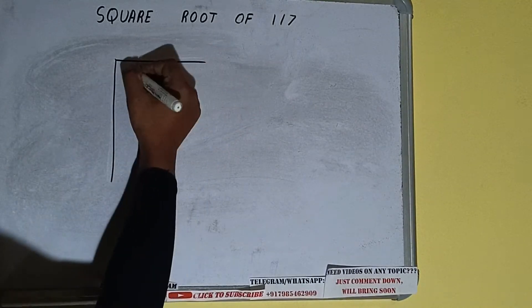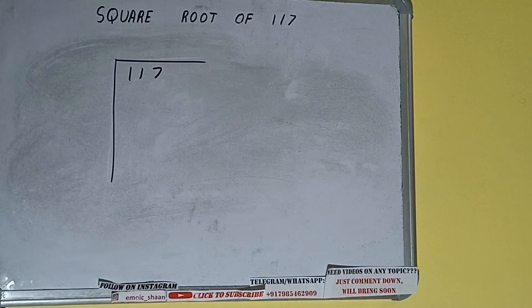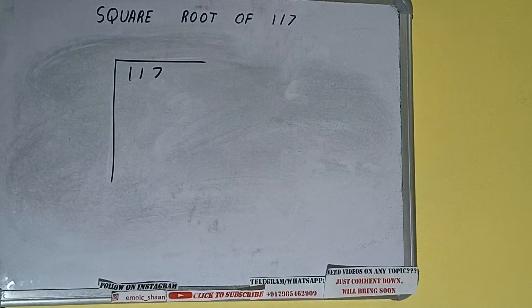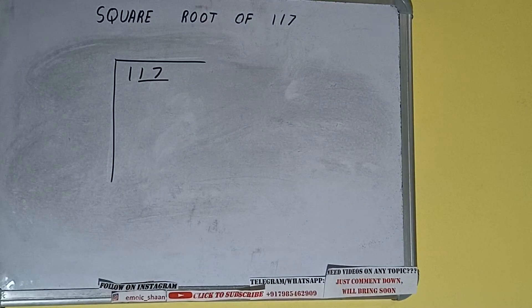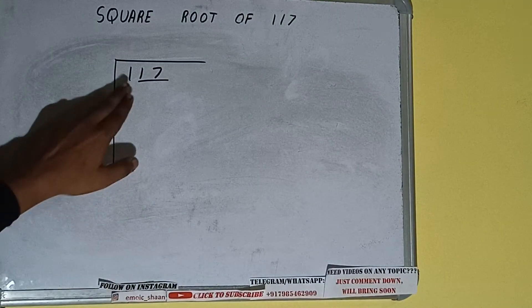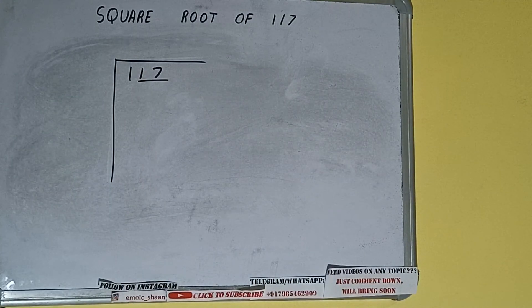First of all we need to write the number like this. The next thing we need to do is form pairs from the right hand side. So one pair will be this and this one will be left out. So first we'll divide this one and then we'll bring down the pair.